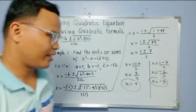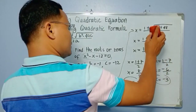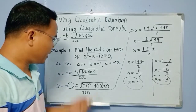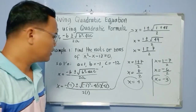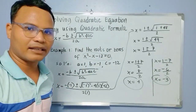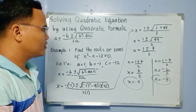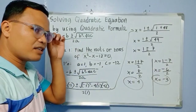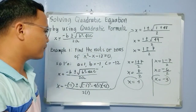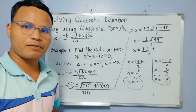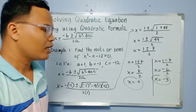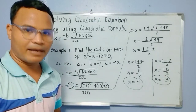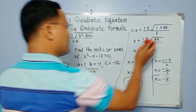So the roots or zeros of x squared minus x minus 12 equals 0 are 4 and negative 3. This equation is also factorable — you can solve it by factoring or by completing the square. It's up to you which method you use. If you've mastered factoring, use factoring; if completing the square, use that; or use the quadratic formula.